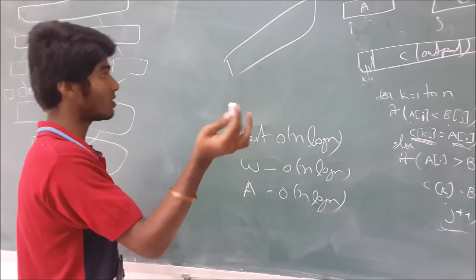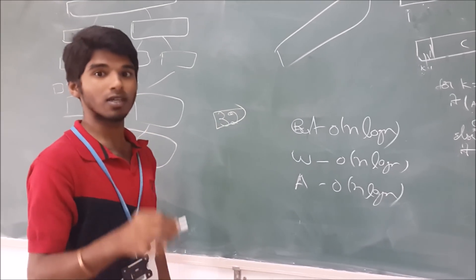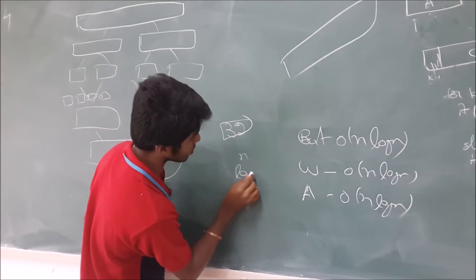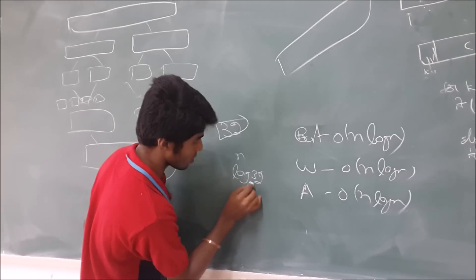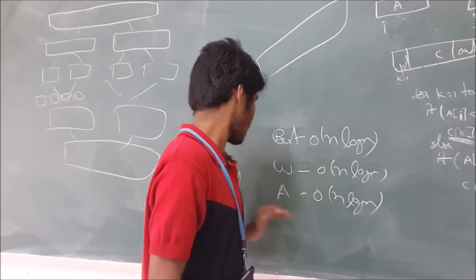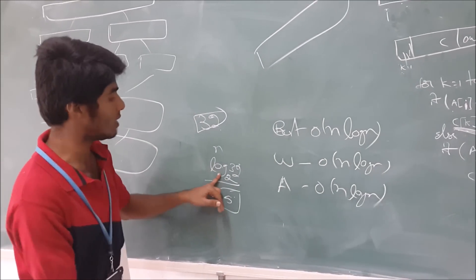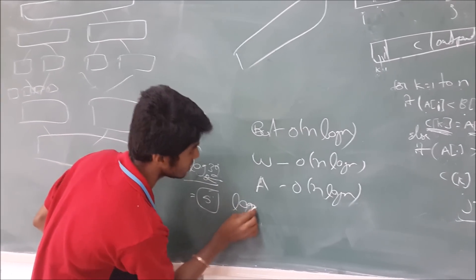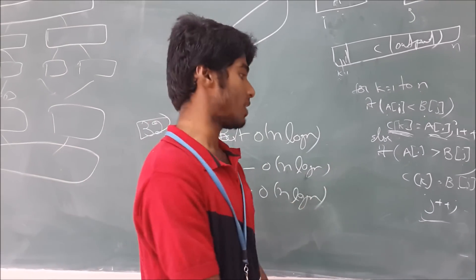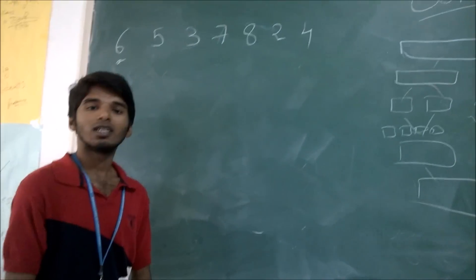How do we get O(N log N)? If we have 32 elements, log base 2 of 32 is 5, meaning we divide the array exactly 5 times: 32 → 16 → 8 → 4 → 2 → 1. So it takes log N times for dividing and N times for merging, giving a total of N log N time. Best and average cases also take O(N log N) time.